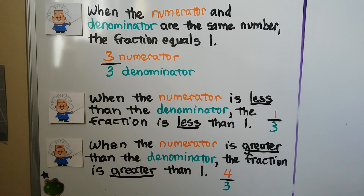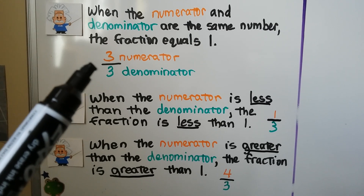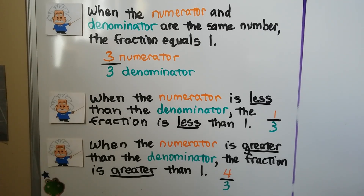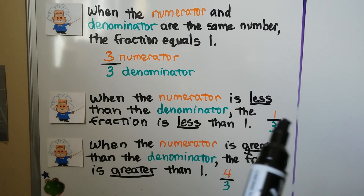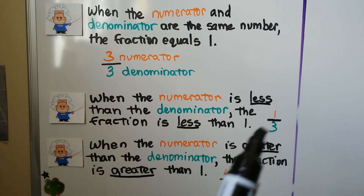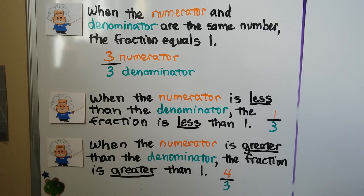As we mentioned in the previous video, when the numerator and denominator are the same number, the fraction equals one. Here we have three thirds — that's one, we have three parts of three parts. When the numerator is less than the denominator, like this one third, the fraction is less than one — we only have one part out of three. When the numerator is greater than the denominator, like four thirds, the fraction is greater than one. Three thirds would equal one, but we have four thirds, that's more than one.